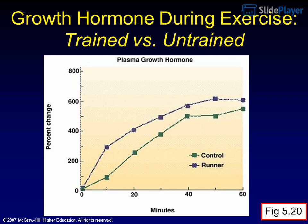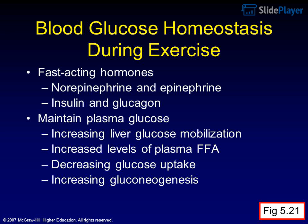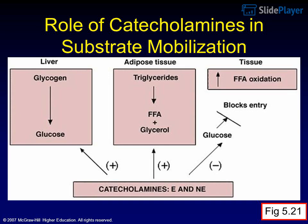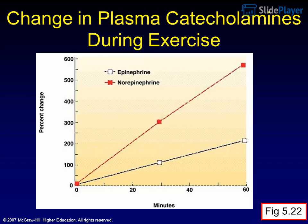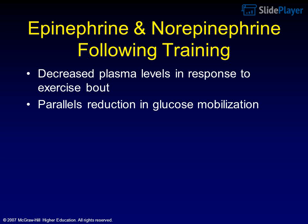Fast-acting hormones — norepinephrine, epinephrine, insulin, and glucagon — maintain plasma glucose by increasing liver glucose mobilization, increasing plasma FFA levels, decreasing glucose uptake, and increasing gluconeogenesis. Epinephrine and norepinephrine increase linearly during exercise, favoring the mobilization of FFA and maintenance of plasma glucose. Following training, decreased plasma catecholamine levels in response to an exercise bout parallel a reduction in glucose mobilization.